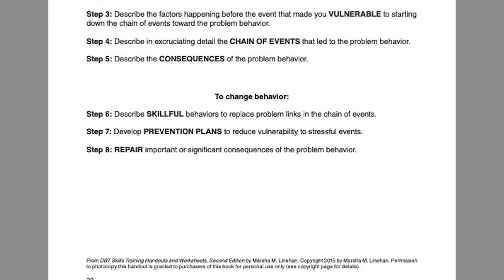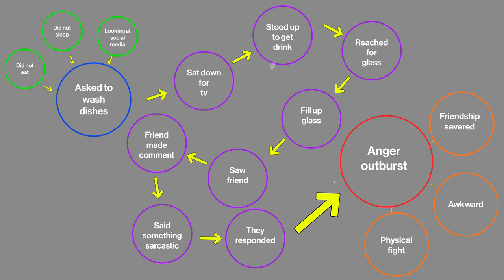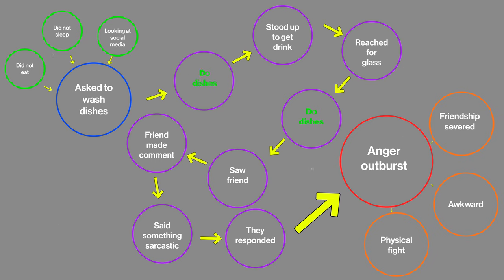That leads us into steps six through eight, where we begin to think about changing the behavior. Step six is to describe skillful behaviors to replace problem links in the chain of events. You refer to all the bubbles from step four — the chain of events — and analyze where you can make a change. For example, perhaps when we stood up to get a glass of water over the sink filled with dishes, we could have decided to do a couple of dishes rather than ignore them. Or perhaps sitting down to watch TV before the chores were done could be a place for potential change. Or perhaps making a sarcastic comment to your roommate could be replaced with assertiveness.